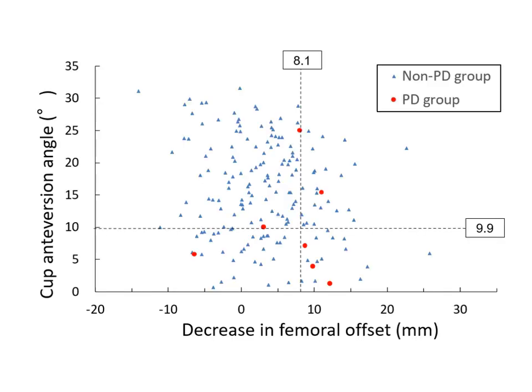Logistic regression analysis showed a significantly higher risk of posterior dislocation among hips with a cup anteversion angle less than 9.9 degrees, or with a decrease in femoral offset over 8.1 mm.